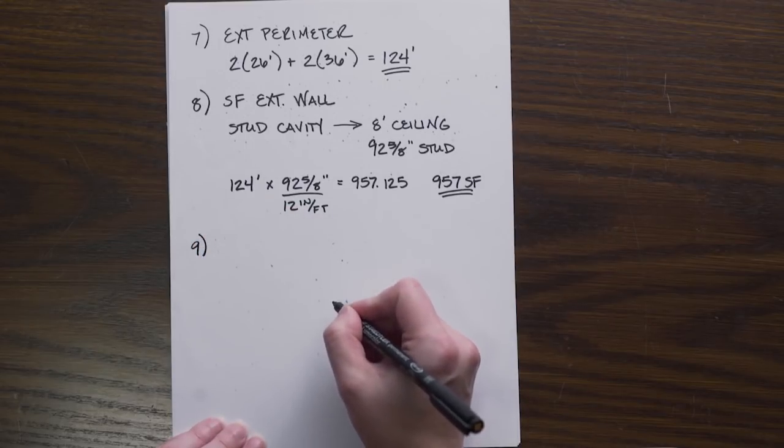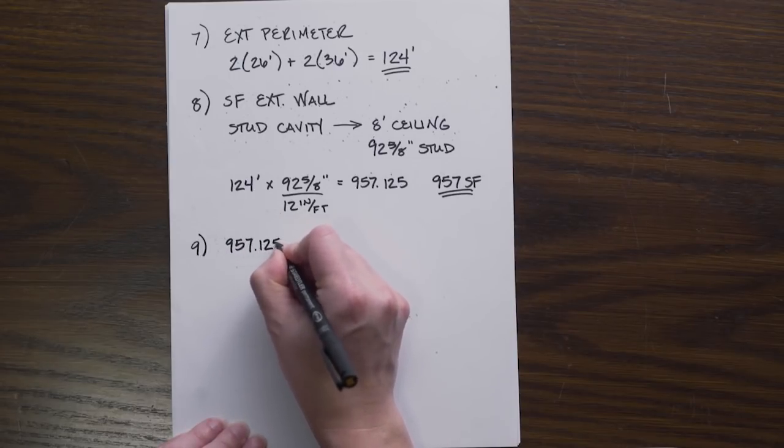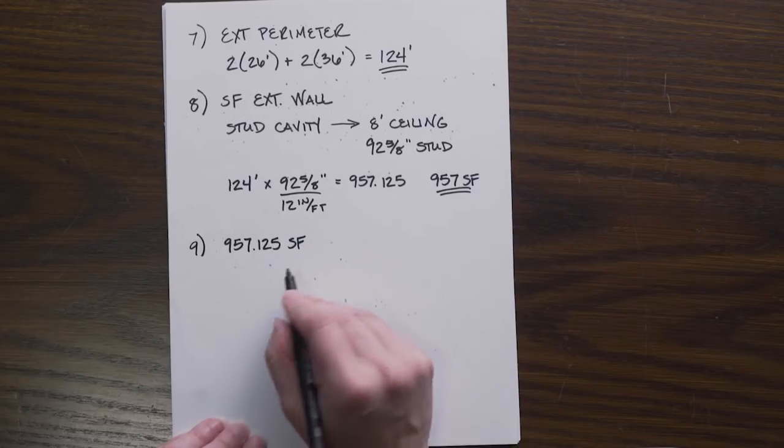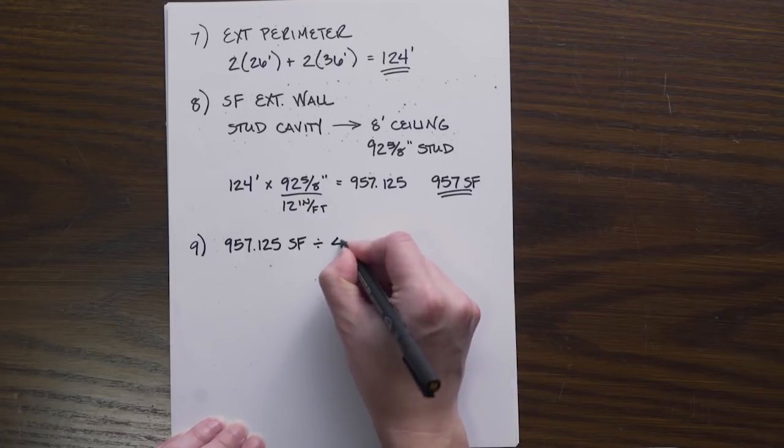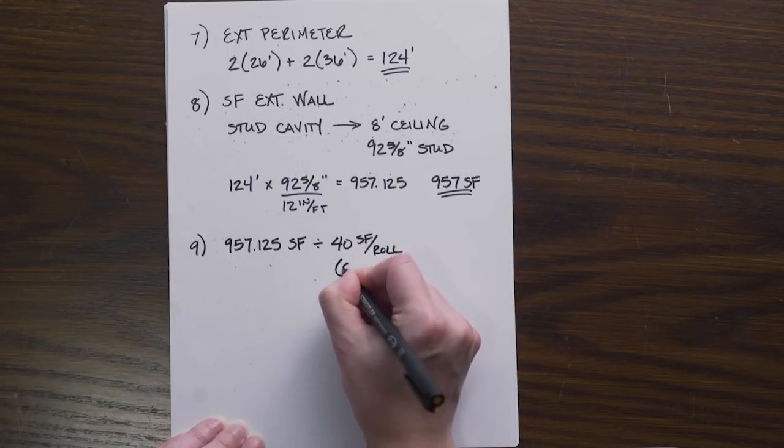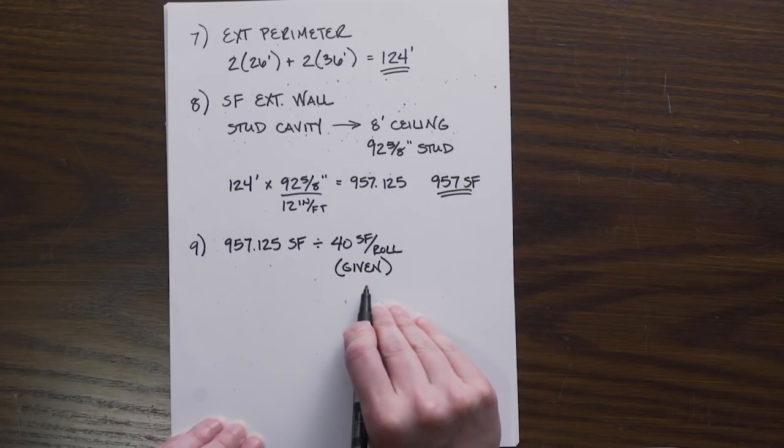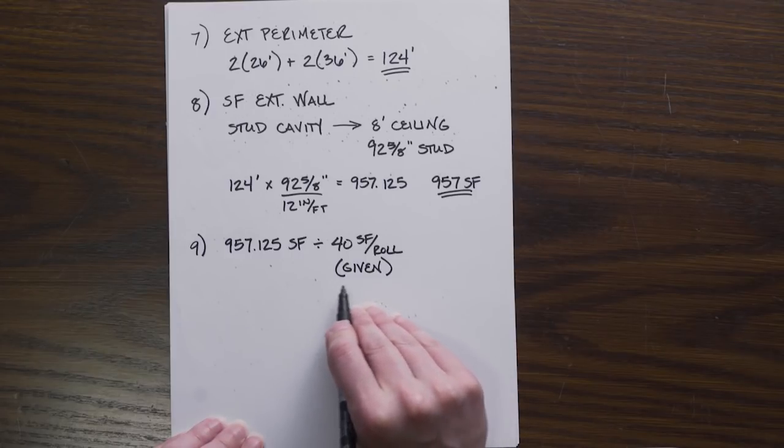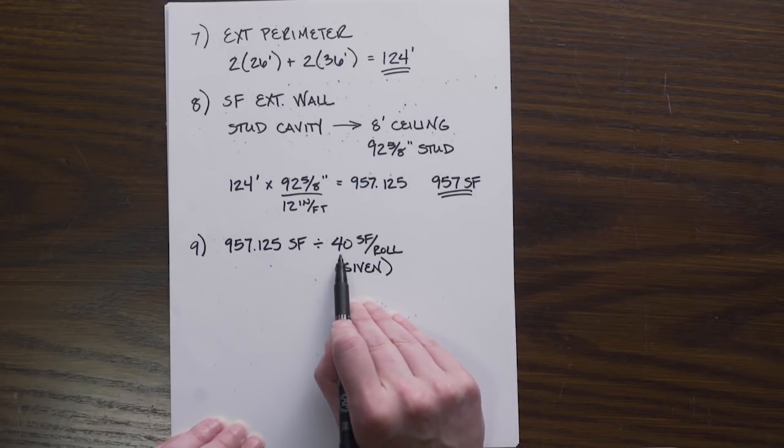For number nine we can take what we just calculated - that we have 957.125 square feet of exterior wall which requires insulation. We divide it by the 40 square foot per roll, and this is what I just showed you is given to us on our first page. Typically it would be given in the specs or per the manufacturer.